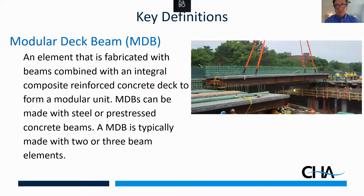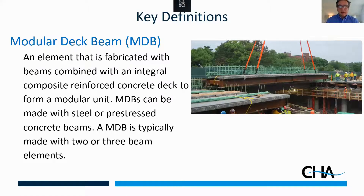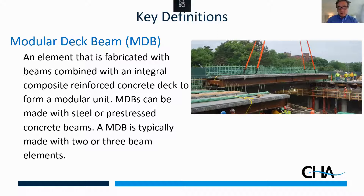A key definition in the AASHTO LRFD Guide Spec for ABC is a modular deck beam — essentially one, two, or three steel beams built with a precast deck on top and shipped to the field like a double-T or triple-T, then set in place and connected along the length of the edge of the slab. Modular deck beams can be made with different types of beams, including press break beams. Some states refer to these as PBUs, prefabricated beam units, but they are essentially the same thing.